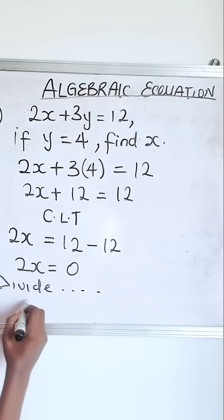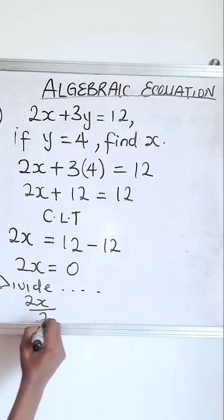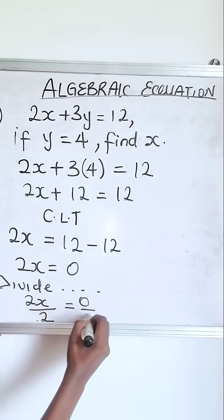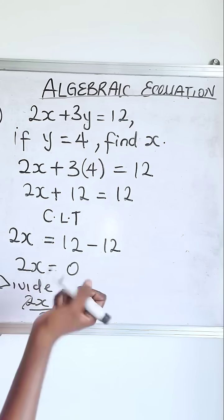So 2x over 2 equals 0 over 2. So x is 1. So x is 1.